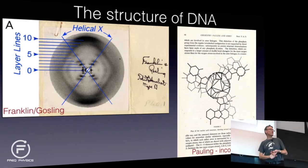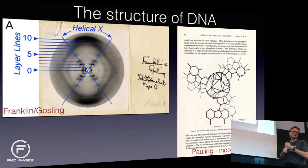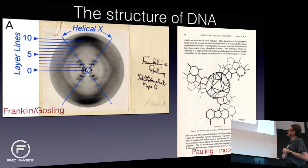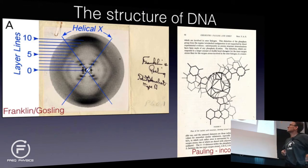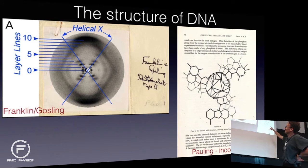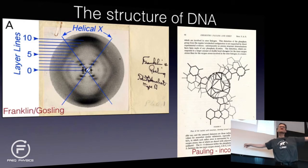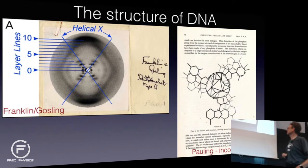What you have here on the right is a model by Linus Pauling — arguably one of the most famous scientists of the 20th century. This is a helical model that uses the bases of DNA, because from chemical composition people knew what the bases in DNA looked like. It's just that we didn't know what the entire structure looked like. This structure looks like a spiral stair in the middle, with the backbone in the middle and the bases pointing out. This was published in Nature, 1952.